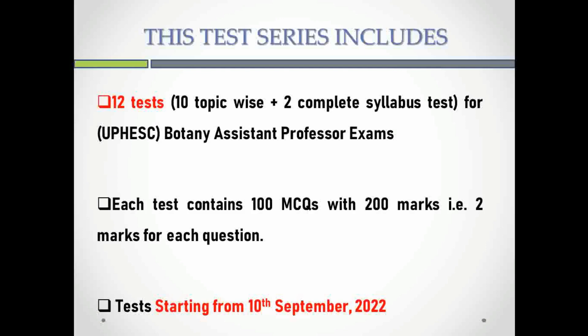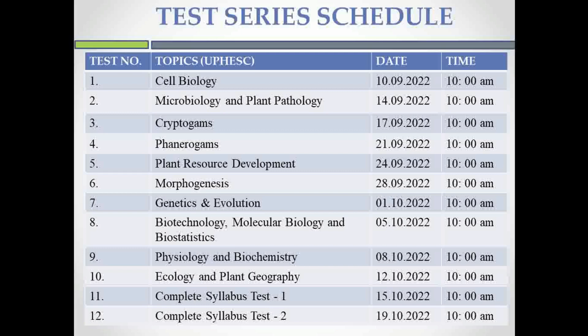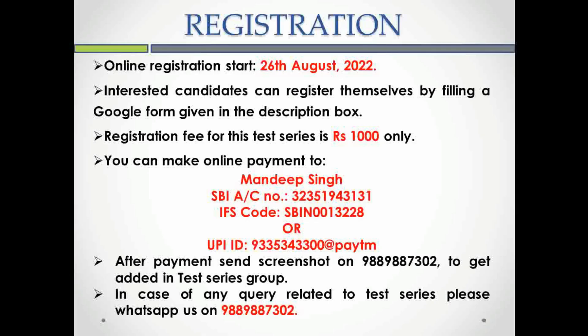Each test contains 100 MCQs with 200 marks, that is two marks for each question. The test series is going to start from 10th September 2022. The schedule covers all topics from the syllabus: Cell Biology, Microbiology and Plant Pathology, Cryptogams, Phanerogams, Plant Resource Development, Morphogenesis, Genetics and Evolution, Biotechnology, Molecular Biology and Biostatistics, Physiology and Biochemistry, Ecology and Plant Geography — followed by Complete Syllabus Test 1 and Complete Syllabus Test 2.